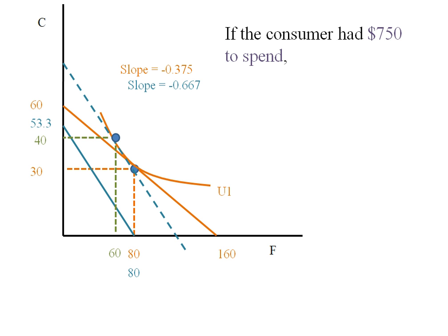Well, if this consumer really did have 750 to spend, they could be on a higher budget line and then ultimately a higher indifference curve. The slope of this line is the same as the slope of our original line, but notice with more money this consumer could buy 125 units of food and 83.3 units of clothing.